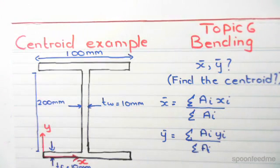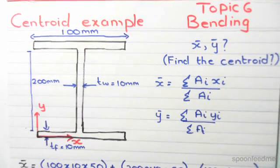The following example is the first example of Topic 6 in bending. It's just trying to calculate the centroid. So how do we work out the centroid? Observing this I-section over here, obviously an I-section...